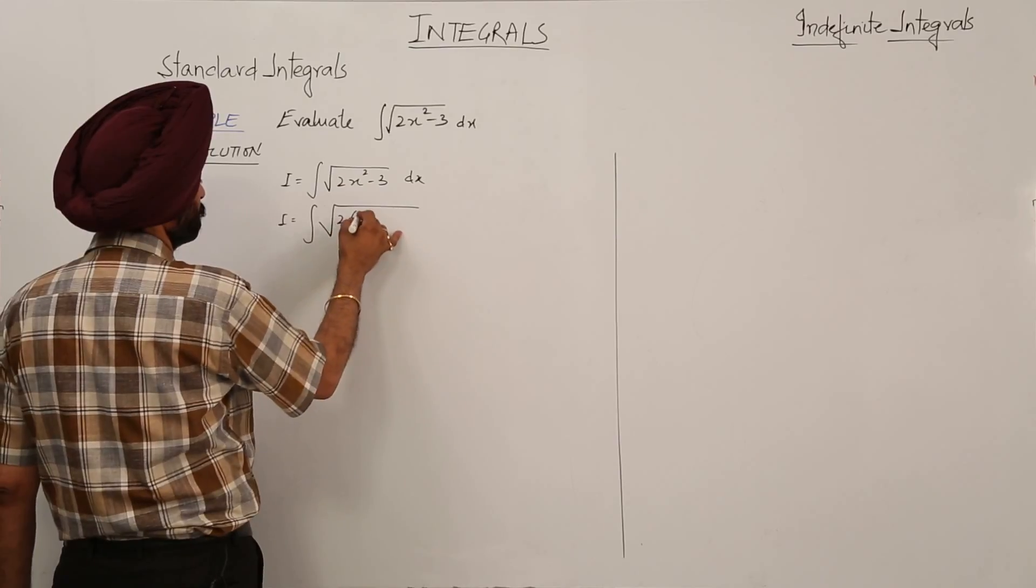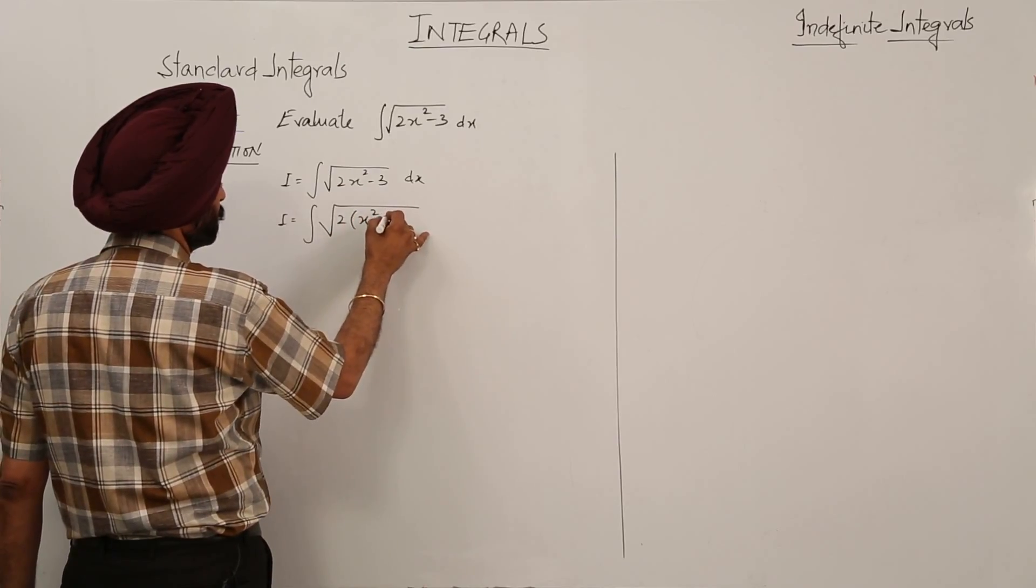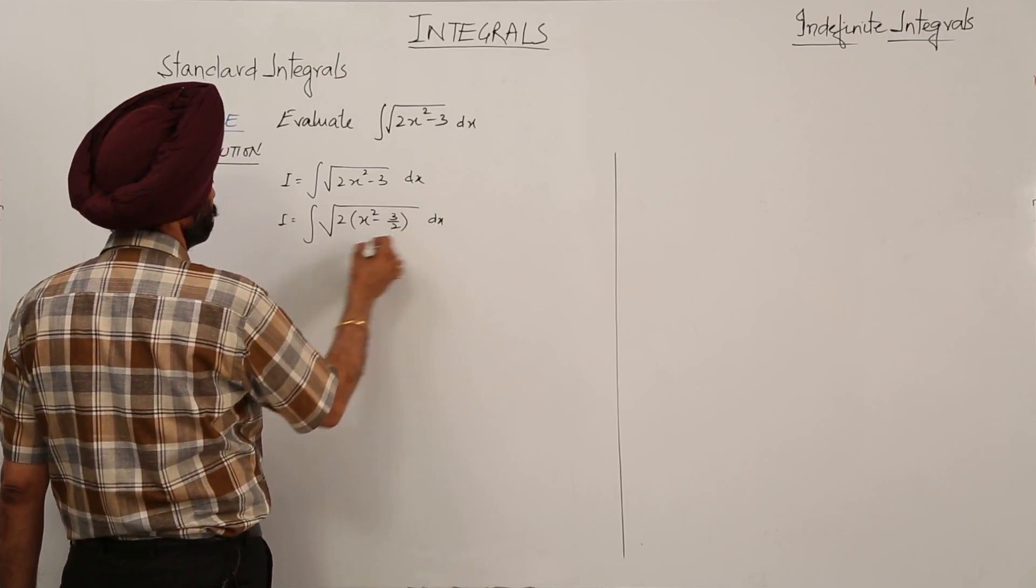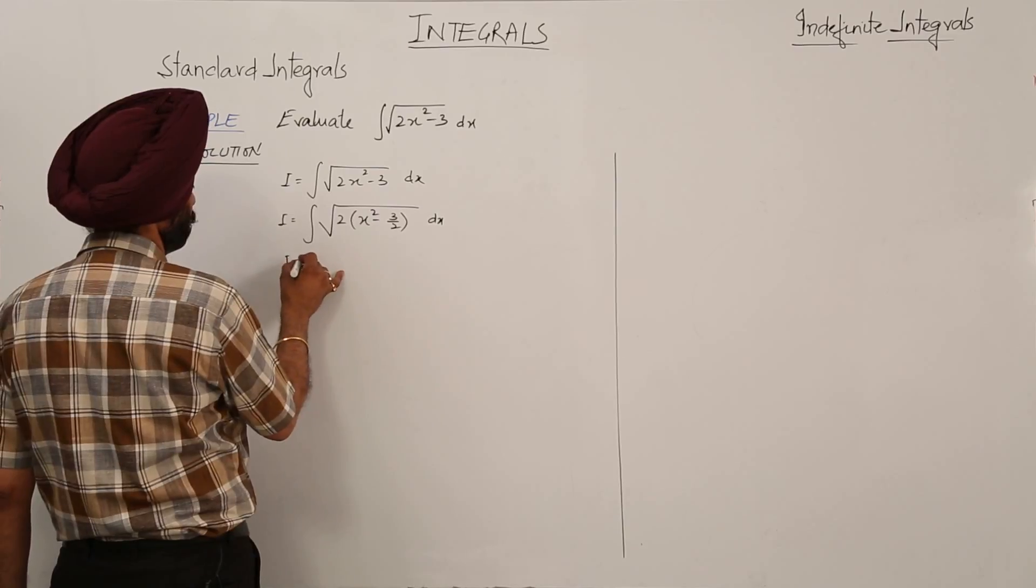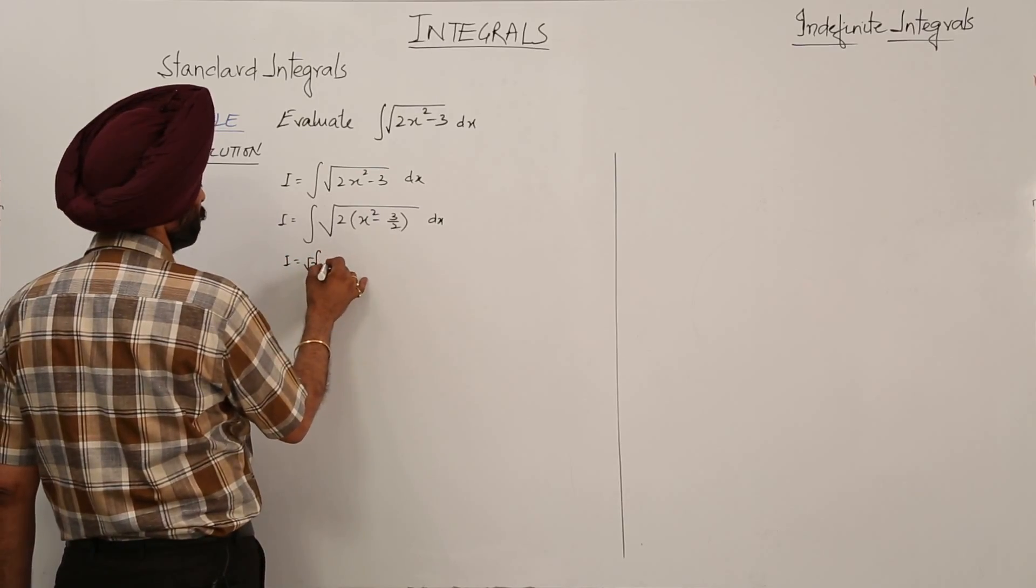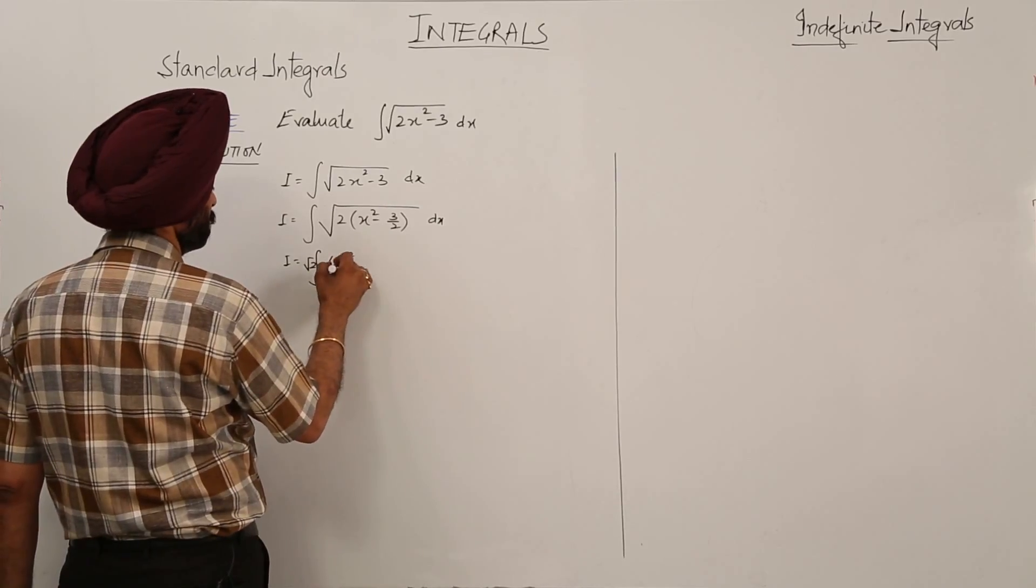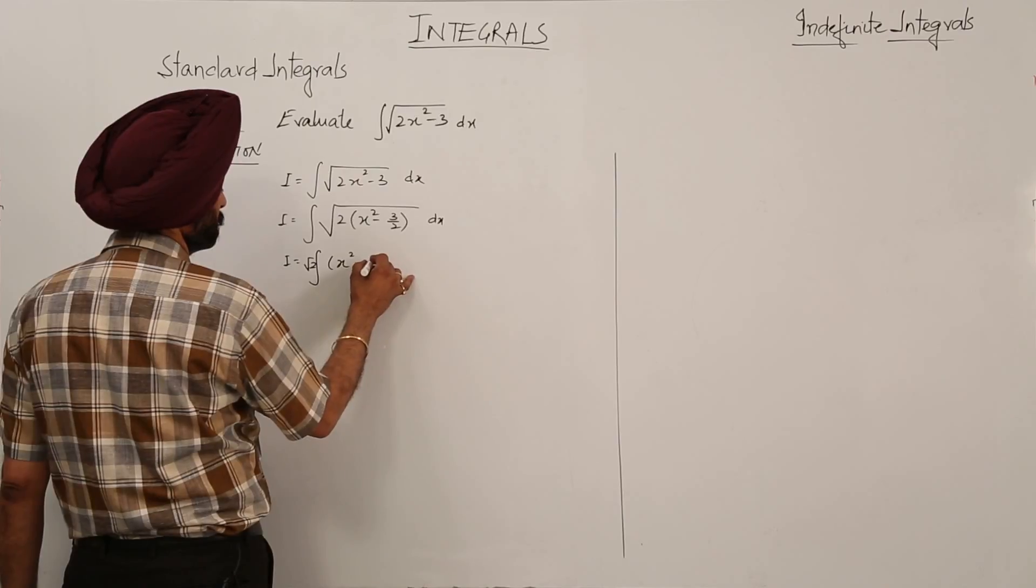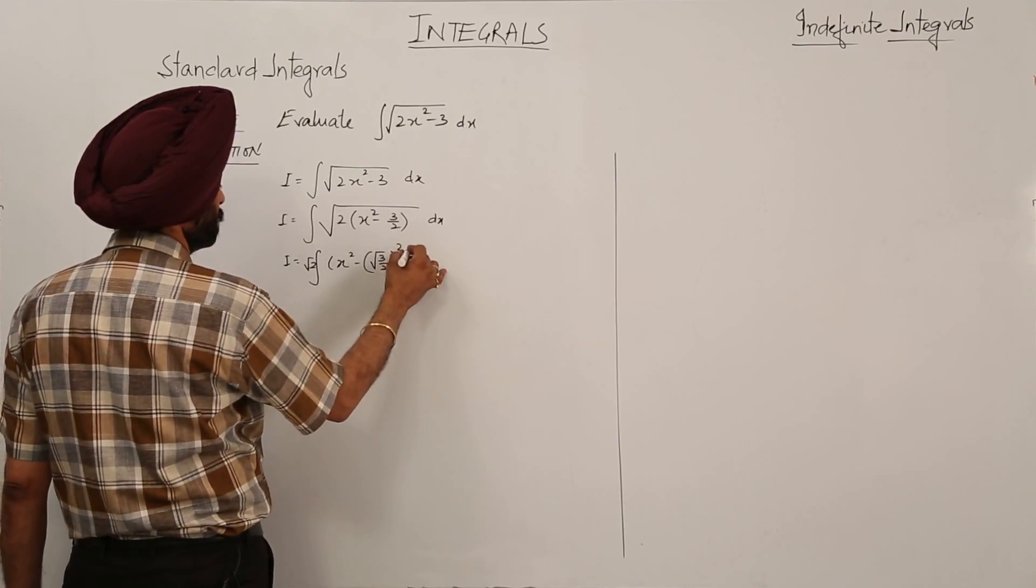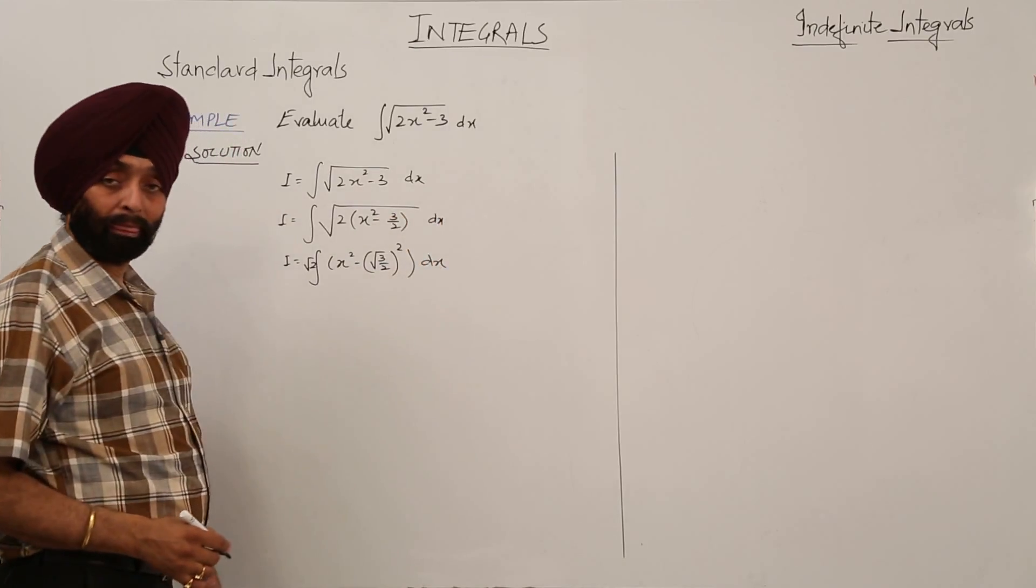First step is to take common the coefficient of x square. Root 2 common: x square minus root 3 upon 2 whole square dx. Is clear.